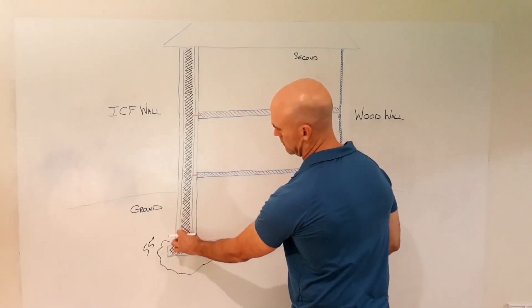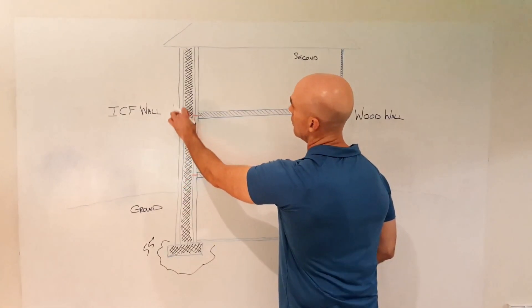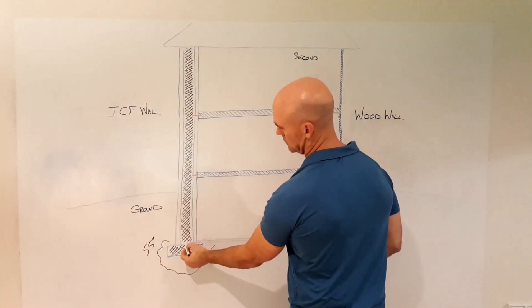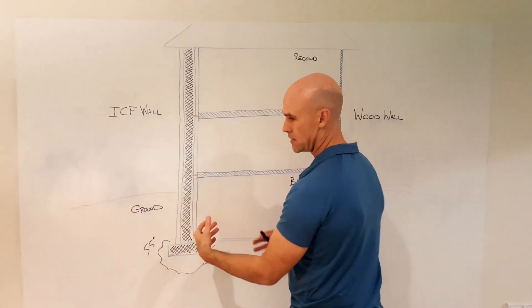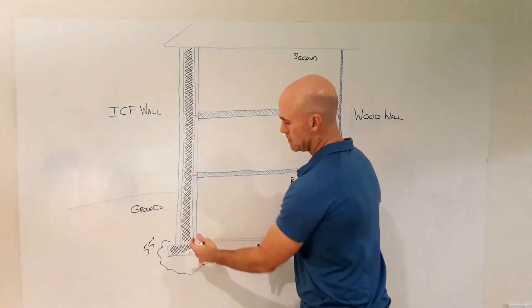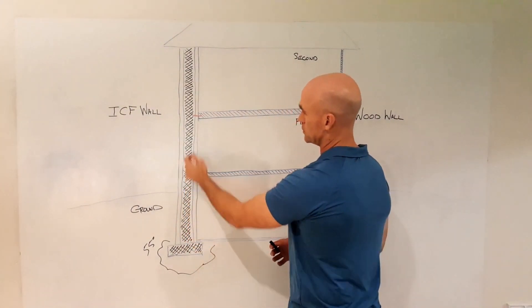That energy then radiates up the ICF wall all the way up to the top of the house. So this 55 degree steady earth mass will transmit that steady temperature all the way up to the top.